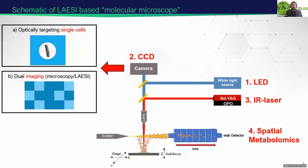This is a schematic of the LAESI-based molecular microscope we've been designing. Very simply, we have a sample stage where we place the cell-containing samples with an LED which illuminates the sample surface. Then we can take an image using the camera at the top of the optical stack, identify where cells are, and fire the laser at each cell sequentially, collecting spectra and therefore a metabolic profile. That's the first mode. The second mode is we can perform dual microscopy and LAESI imaging of the sample.